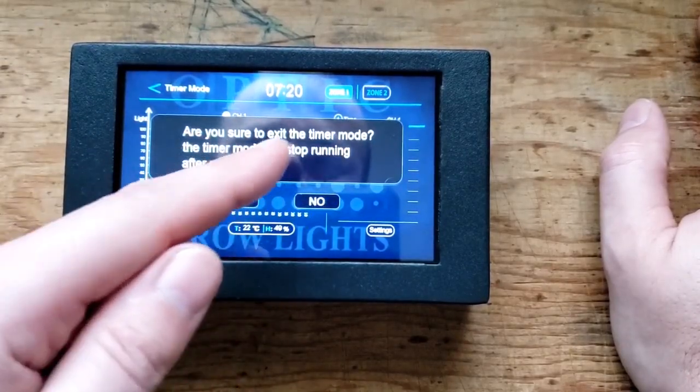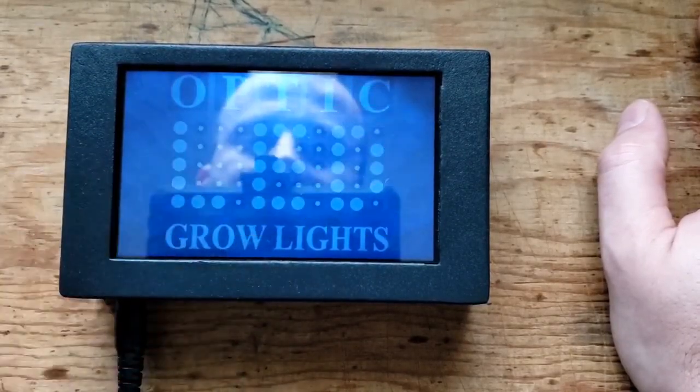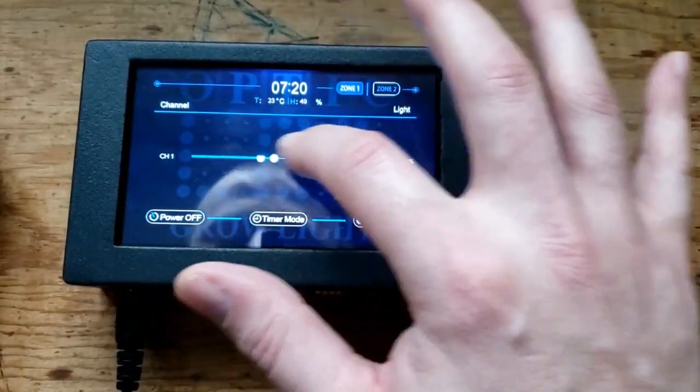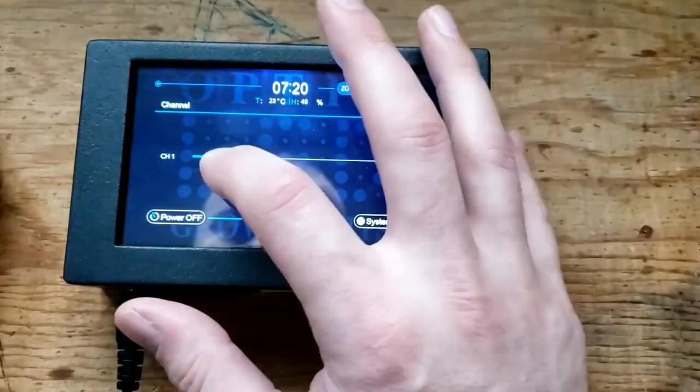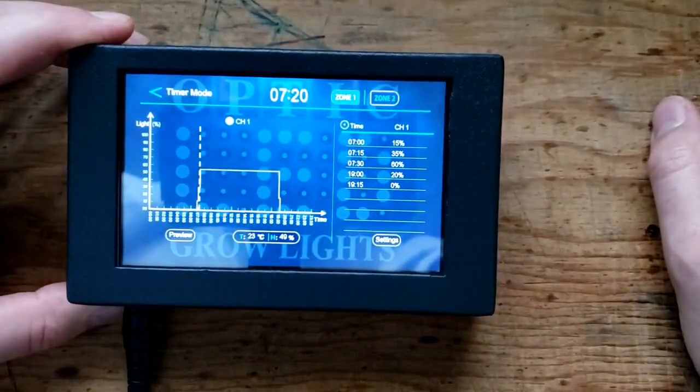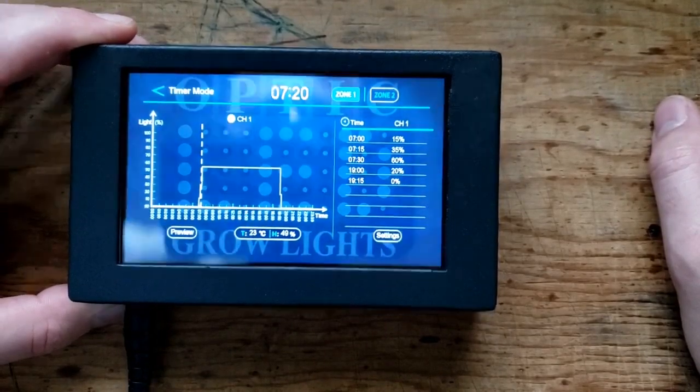So you got to make sure you back out and you want to be on this timer mode menu right here. That's what you want. If you go all the way back, it's going to ask you, the timer mode will stop running, and then you can go back to here and you can manually dim your light if you're working in there and you want to dim it down for a few or whatever. But you got to make sure you click the timer mode again.